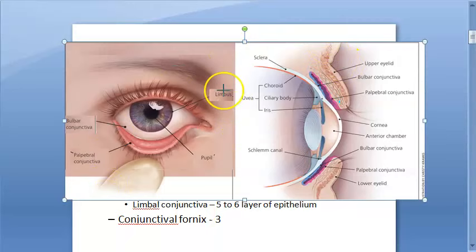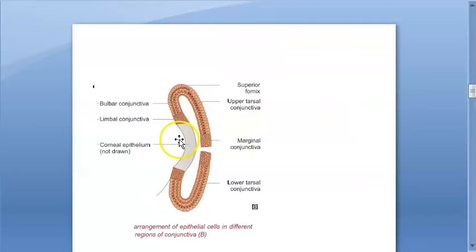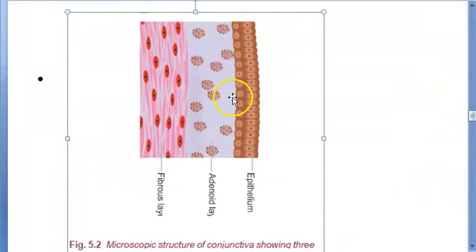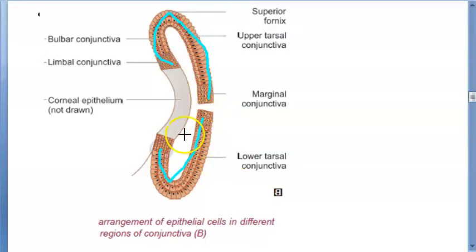The conjunctival fornix can be divided into superior, inferior, medial, and lateral parts. Looking at the microscopic structure of conjunctiva, there is the epithelium, the adenoid layer, and the fibrous layer. The epithelium can vary in the number of layers depending on the region.